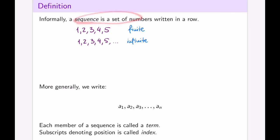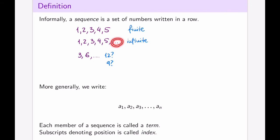Sequences we will be interested in are the ones that have a pattern. You have to include enough numbers to understand what that pattern is. For example, if I write 3, 6, dot dot dot — what is the next number? Is it 12, because I'm multiplying by 2? Or is it 9, because I'm adding 3 every time? That's not clear. So if we use dot notation because we cannot write infinitely many numbers, we've got to do so carefully in order for the pattern of the sequence to become obvious.